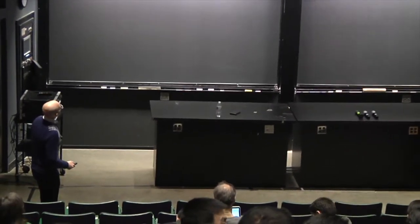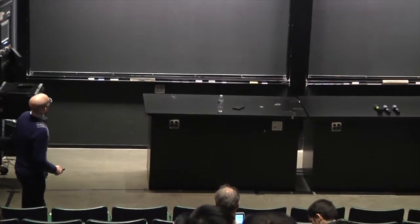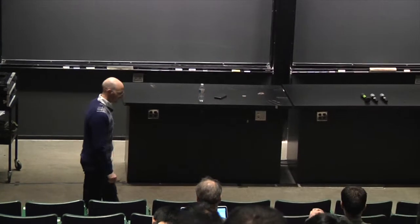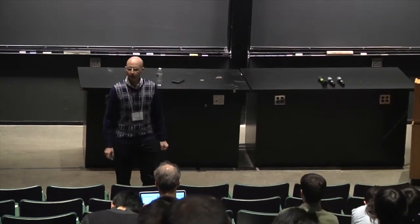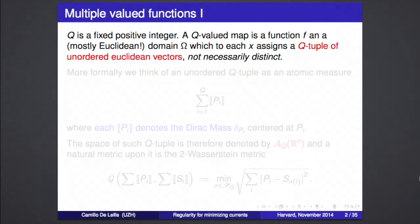So the first thing, having in mind the blueprint of the plan, is the first step in which we want to define what are perhaps determining more than one value and what is the energy. Then there's a second step: we want to see why an area-minimizing current would be close to these maps which take two values and minimize the energy.